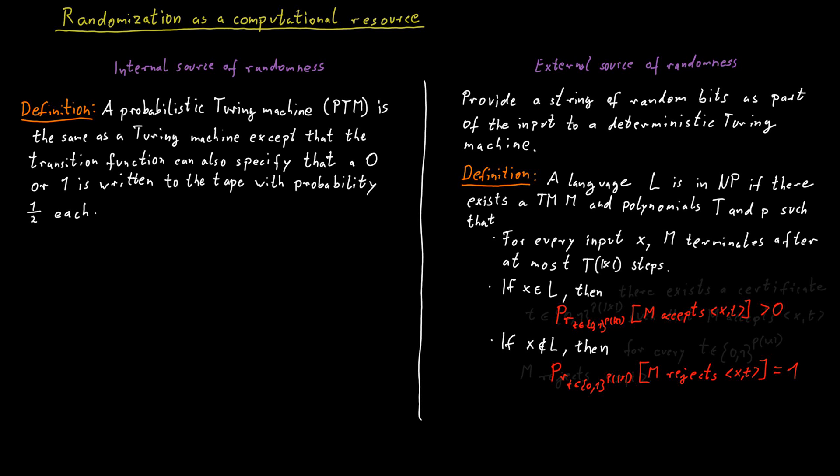So these are the different types of views we can take to incorporate randomization in our computational models. All of these things are completely equivalent, so to some extent you can pick whatever way you prefer. We will often use the notation that corresponds to feeding in random bits from outside into the deterministic Turing machines. But at times we will also just talk about probabilistic Turing machines or randomized algorithms because sometimes it's just easier.